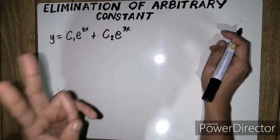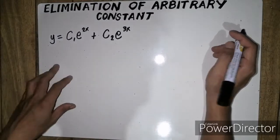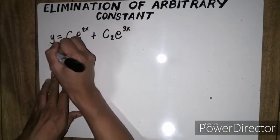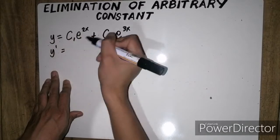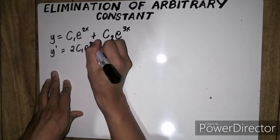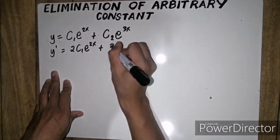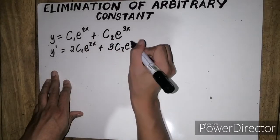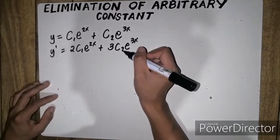So ibig sabihin nun, mag-derive tayo ng dalawang beses. So yung first derivative niya ay, bring down 2, 2 c1e to the 2x plus bring down 3, 3 c2e to the 3x.